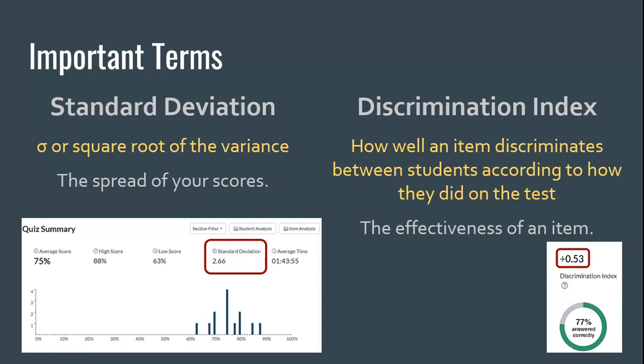That standard deviation gives you a sense of how spread out from the average your students were. When you look at this quiz summary, you should reflect: how did I think they would perform? How much do I think they know about these topics? And does that align with what I'm seeing in this standard deviation?